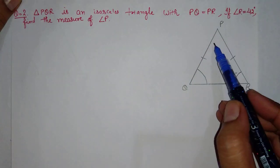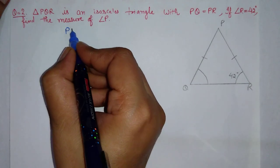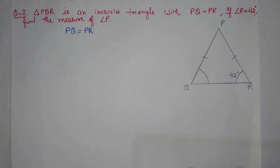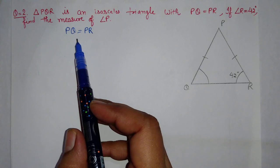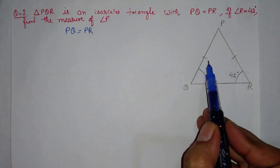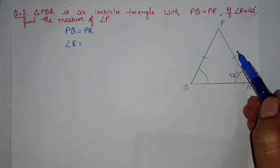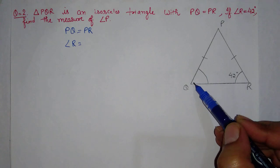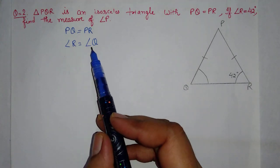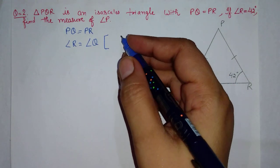Question number 2: triangle PQR is given. You have to find angle P. First, two sides of the triangle are equal — PQ is equal to PR. As I just told you, if two sides of a triangle are equal, the angles opposite to those sides will also have the same value. So the PQ side — going opposite — gives angle R. And the PR side — going opposite — gives angle Q. So angle R and angle Q are equal.